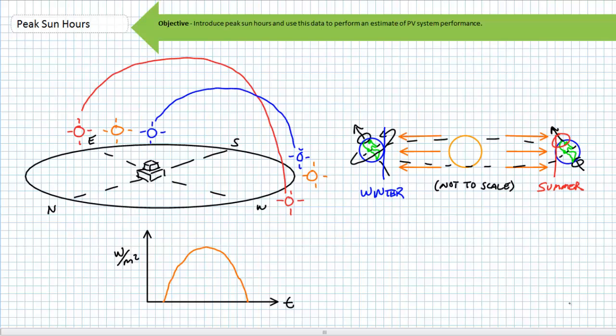On any given day, the sun will rise at a certain time, shine with increasing intensity, reach some maximum, and decrease in intensity until it sets.